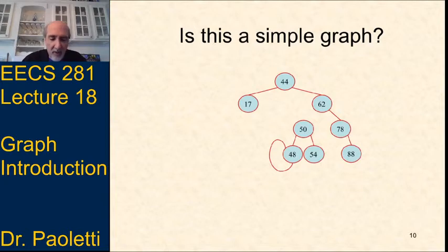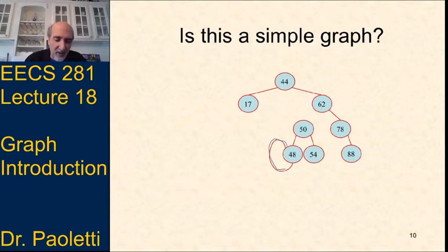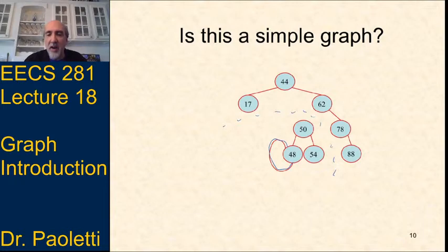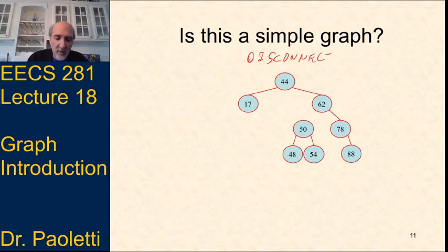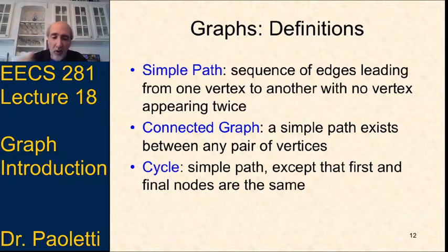Is this a simple graph? No — it's got a self-edge, so it's not a simple graph. It still has two separate regions not connected to each other, and only that one self-edge prevents it from being simple. If we eliminate that self-edge it becomes a simple graph, however it is disconnected.